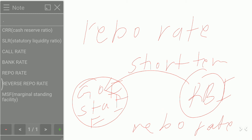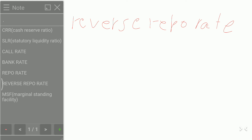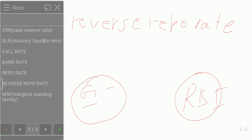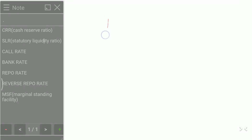Now Reverse Repo Rate. Reverse repo rate is the rate of interest which RBI gives to its clients when it takes loans from them on short term lendings. When RBI is taking loans from its clients — like the Government of India, state governments, and so on — on short term, the rate of interest the RBI pays to them is called the reverse repo rate.